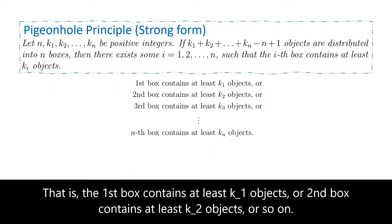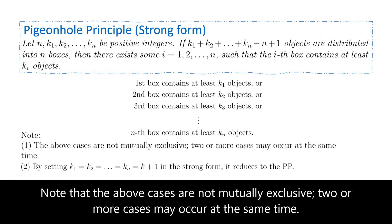That is, the first box contains at least k1 objects, or the second box contains at least k2 objects, or so on. Note that the above cases are not mutually exclusive; two or more cases may occur at the same time.